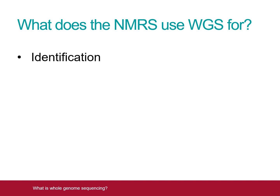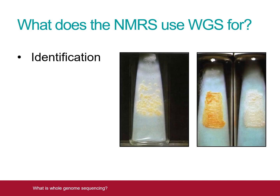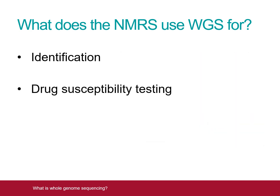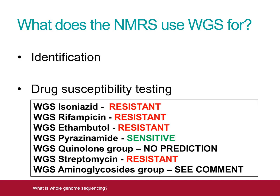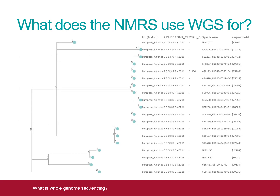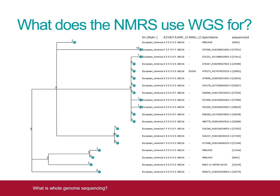WGS is capable of identifying all mycobacterial species. For Drug Susceptibility Testing, WGS can be used to predict drug susceptibility for the main agents used in treating tuberculosis infection. For Cluster Investigation, WGS allows high resolution comparison of TB isolates from different patients, allowing transmission clusters to be identified with ease.